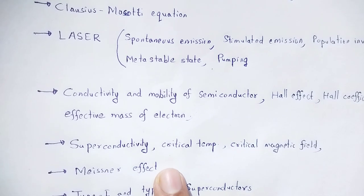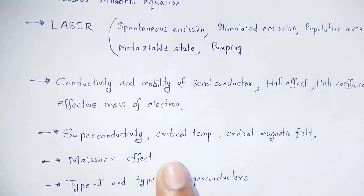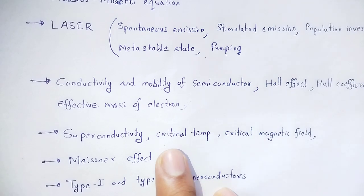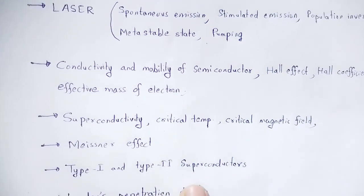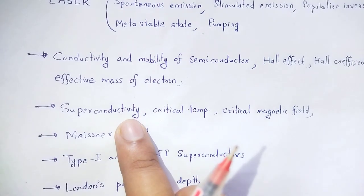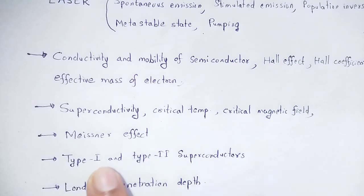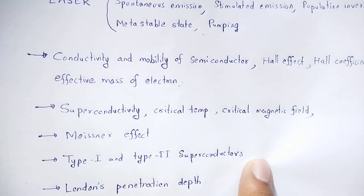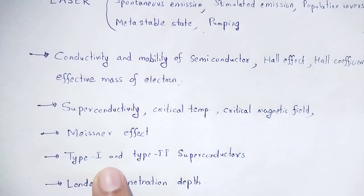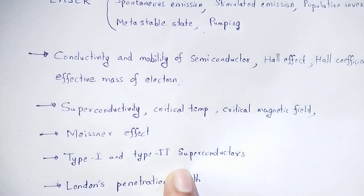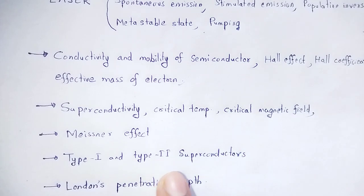The Meissner effect is an important effect in superconductivity. Type 1 and Type 2 superconductors — their basic differences. Type 1 and Type 2 are distinguished by their behavior in magnetic fields. Key differences between Type 1 and Type 2 superconductors will be covered.